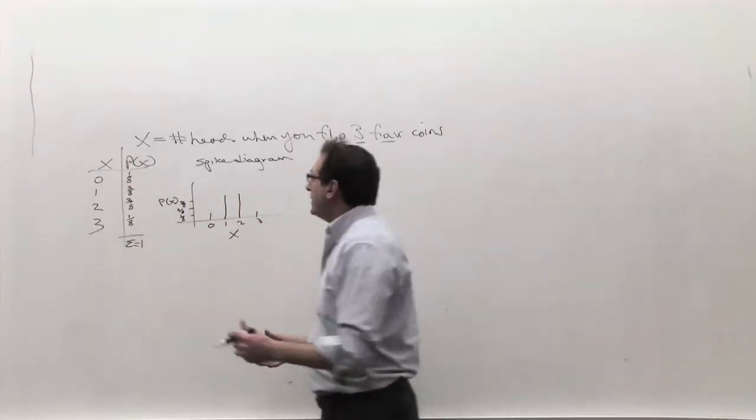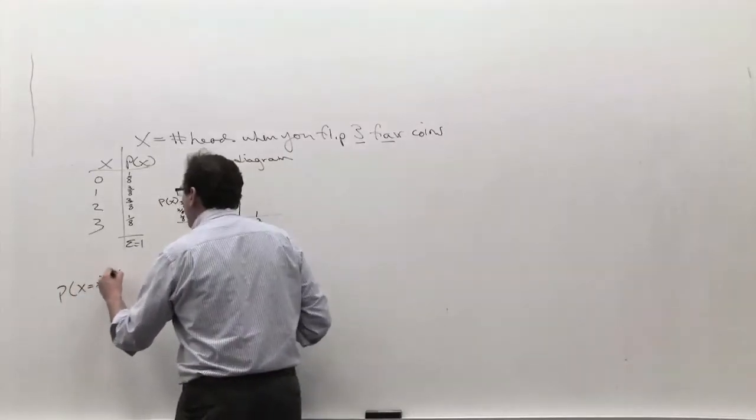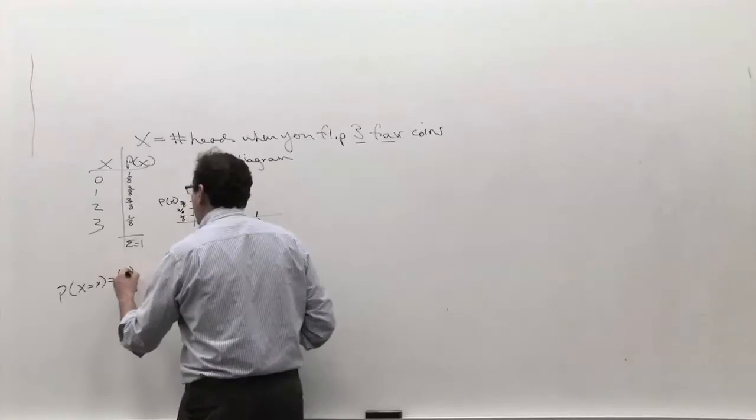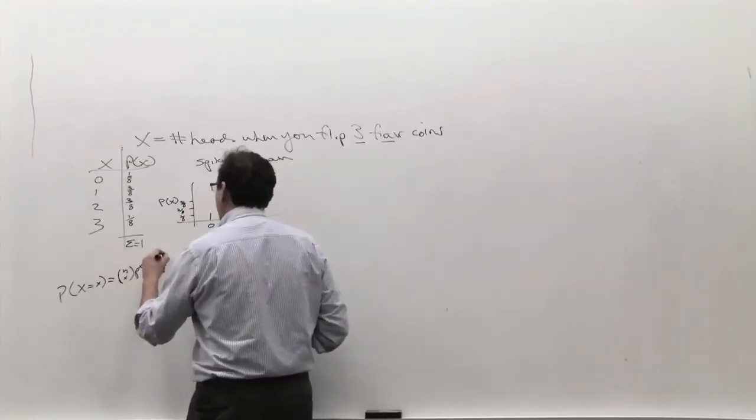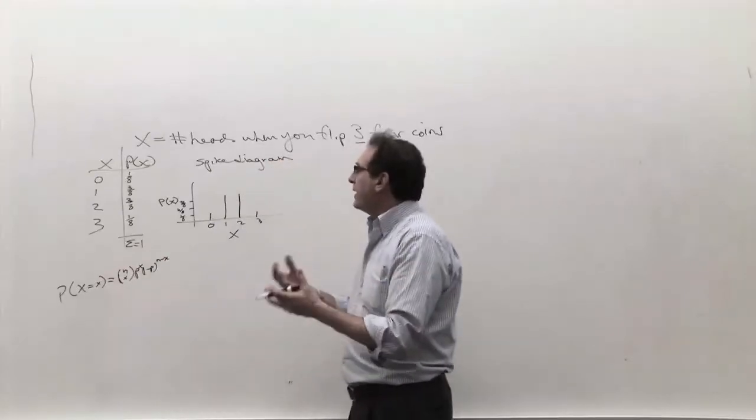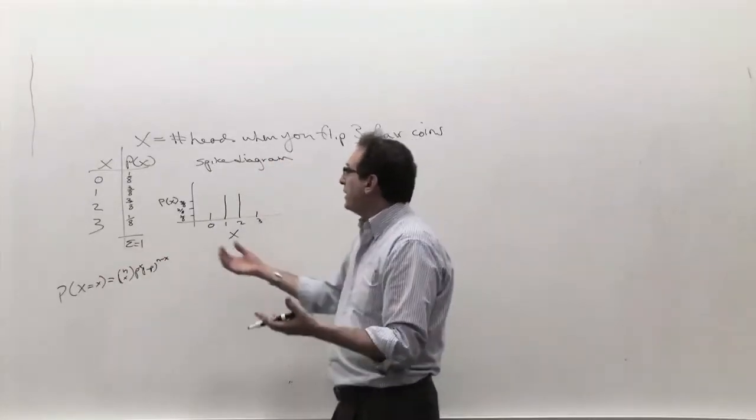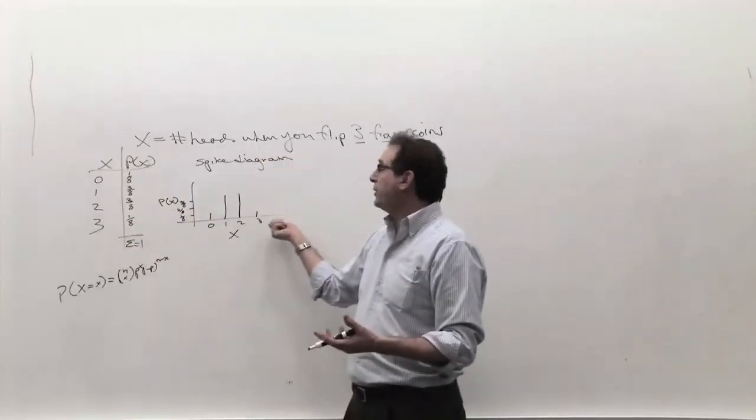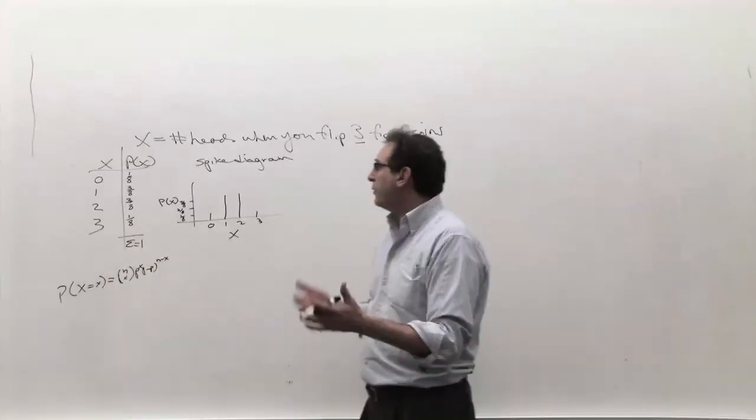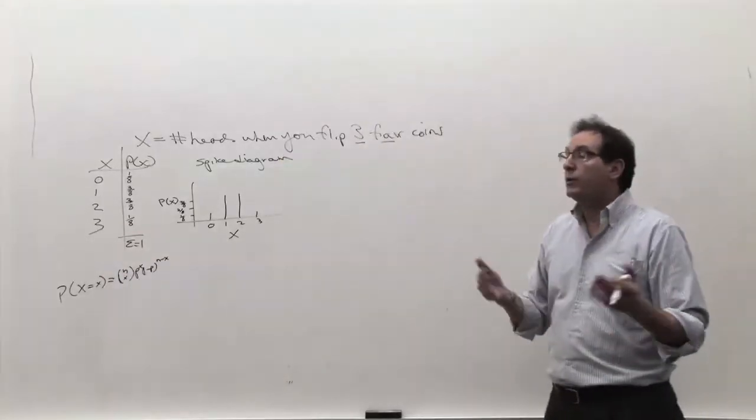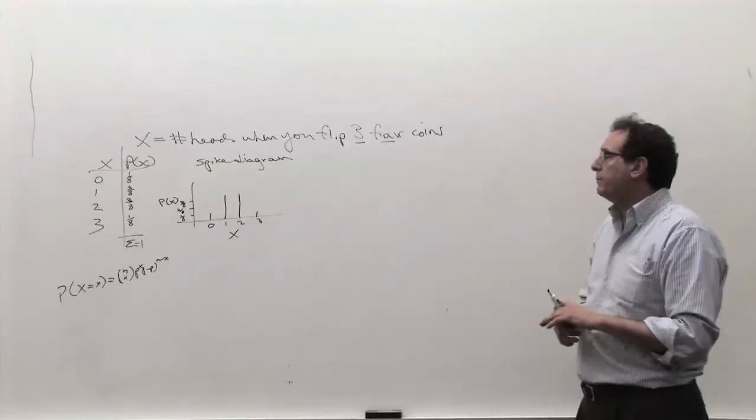So this little picture is essentially the exact same information contained over here, which in turn is the exact same information contained by your mathematical formula: P(X=x) is n choose x. You have a choice. If I told you, write down the information we know about flipping three coins, you can write it out this way or make a picture this way. And if you prefer an equation, you have an equation this way. Three ways of saying more or less the same thing.